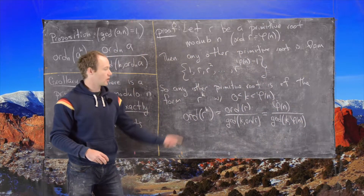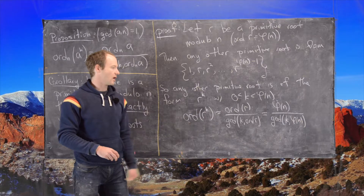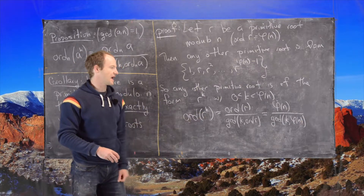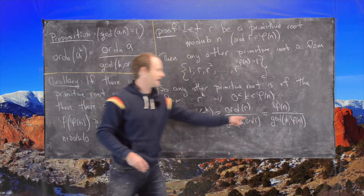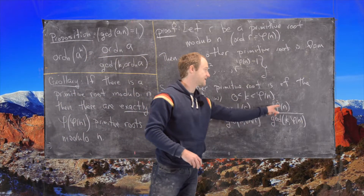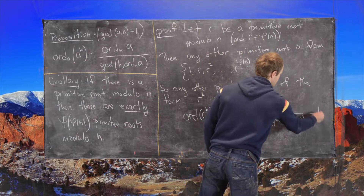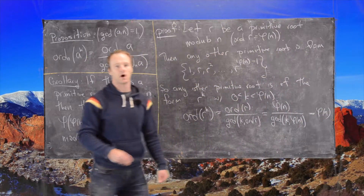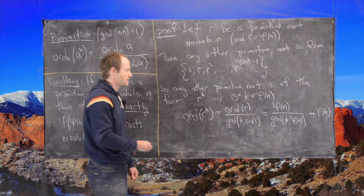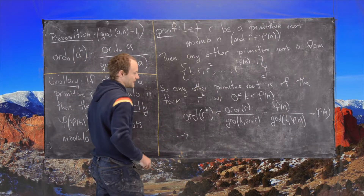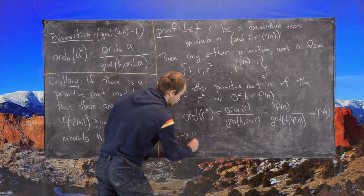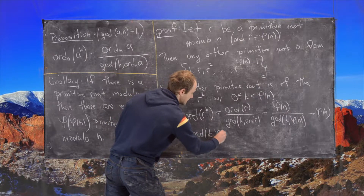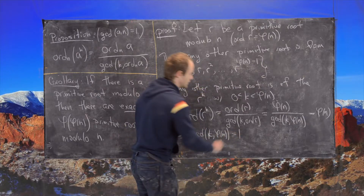Our goal is to find when r^k is a primitive root. That happens exactly when the order of r^k equals φ(n), which requires φ(n) / gcd(k, φ(n)) = φ(n), meaning the GCD of k and φ(n) must equal 1.